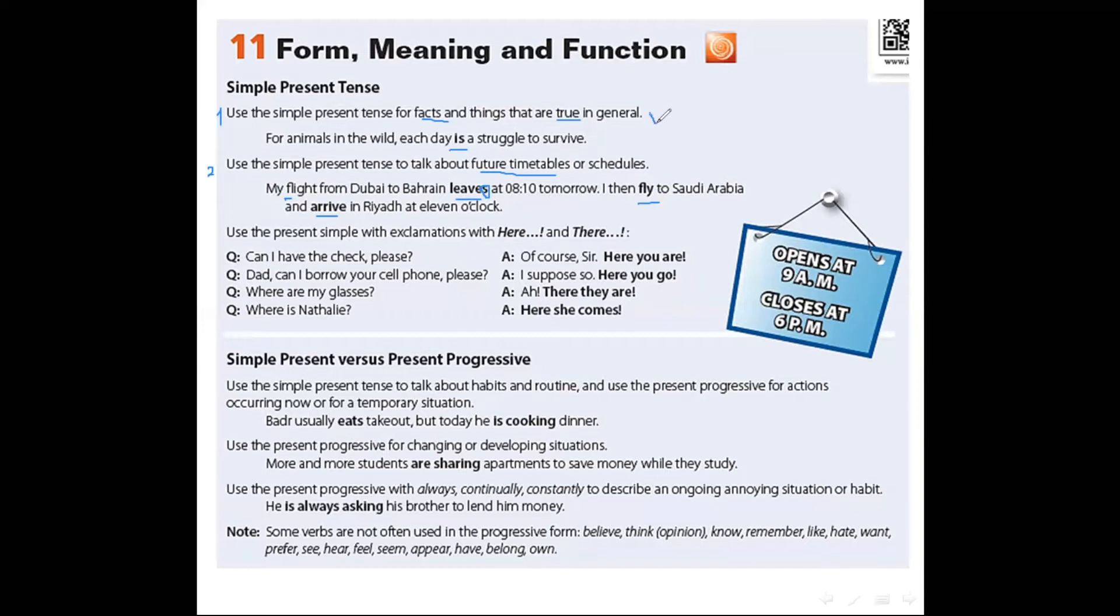The form of simple present is the verb in the base form or infinitive or the verb plus S. We use verb in infinitive form if the subject is plural: I, they, you or we. We use verb plus S if the subject is singular: he, she or it. Is it clear now? Write the notes please.